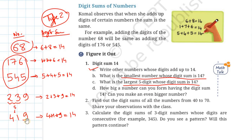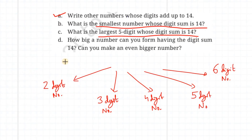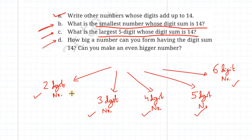I have already written 239, 419, and other such numbers where the digit sum is 14. Now we are going to consider three very interesting questions. First: what is the smallest number whose digit sum is 14? Second: what is the largest 5-digit number whose digit sum is 14? And third: how big a number can we form having a digit sum of 14? I am going to generalize this problem for 2-digit, 3-digit, 4-digit, 5-digit, 6-digit and so on. Let us start with the 2-digit case.